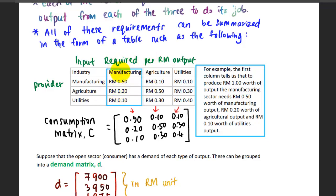This is how you're going to interpret the data based on this table. The consumption matrix C is basically all values from the table without modifying anything. This will be the consumption matrix to show that in order to produce one ringgit worth of products, how much will be spent on manufacturing, agriculture, and utilities.